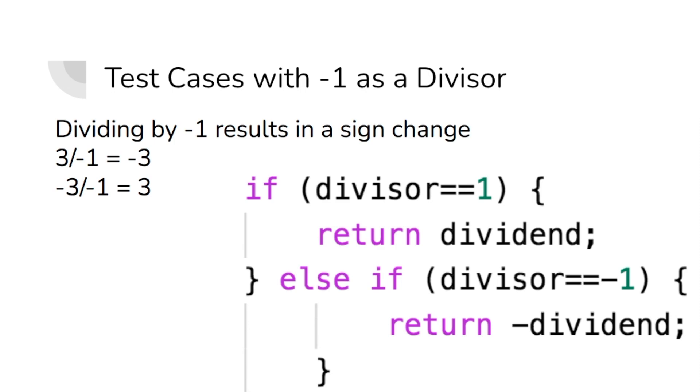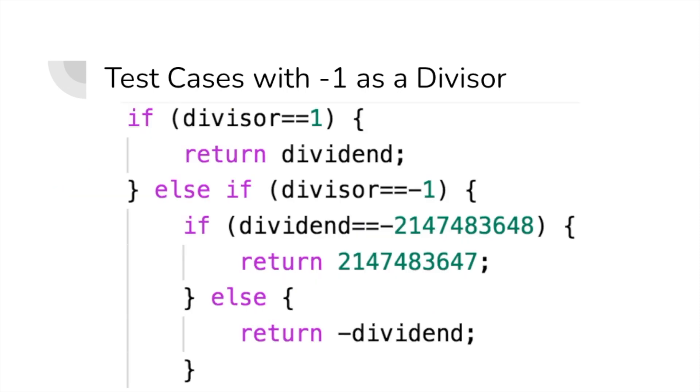Now, we have to be a bit careful here. Remember how I said the lower integer limit is 1 more than the upper positive limit? If our dividend ended up being the lower limit, then we would get an integer overflow error. We should return the upper limit if a quotient would break the upper limit, so that's what we're going to be doing here.